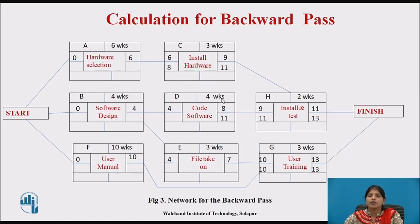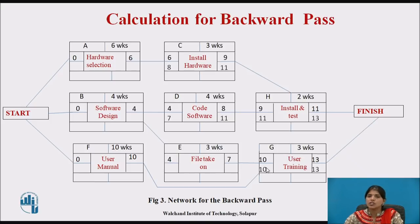For activity D, duration is 4 weeks, so 11 minus 4 gives latest start of 7. E and F are the precedents of activity G, so the latest start date of G — which is 10 — is written as the latest finish date for activities E and F.